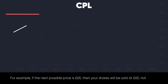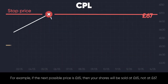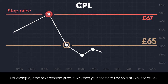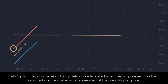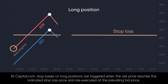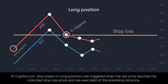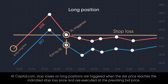For example, if the next possible price is £65, then your shares will be sold at £65, not at £67. At Capital.com, stop losses on long positions are triggered when the ask price reaches the indicated stop loss price and are executed at the prevailing bid price.